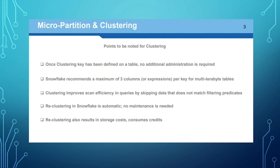For clustering, additional administration is needed. In Snowflake, we will discuss complete auto administration. We can define up to three columns for clustering. For multi-terabyte tables, clustering columns also improve scan efficiency. Snowflake can automatically recluster data. Reclustering is done automatically by Snowflake and uses a cluster ID.